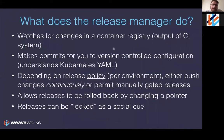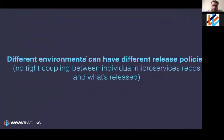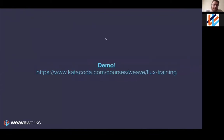The release manager watches for changes to the container registry, makes commits for you to the version control config, and then depending on release policy — which can be configured per environment — it either pushes changes continuously or allows manually gated releases, like 'manually promote this version to production.' You can roll back releases just by changing a pointer in a config file, and releases can also be locked. Different environments can now have different release policies, and there's no more tight coupling between individual microservice repos and what's running in different environments.